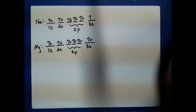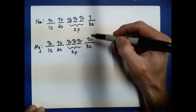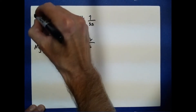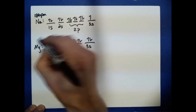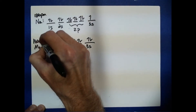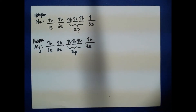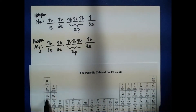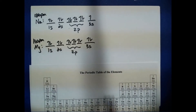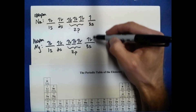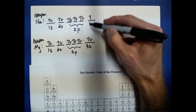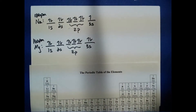The sizes of these two atoms are 186 picometers for sodium and 160 picometers for magnesium. Magnesium is a little smaller than sodium because, as you move across the period, the effective nuclear charge increases, pulling in the valence electrons — in both cases the 3s electrons — a little tighter.